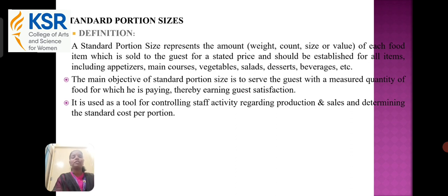The next topic is about standard portion size. A standard portion size represents the amount — by weight, count, size, or value — of each food item which is sold to the guest for a stated price, and should be established for all items including appetizers, main courses, vegetables, salads, desserts, beverages, etc. The main objective of the standard portion size is to serve the guest with the measured quantity of food for which they are paying, thereby earning guest satisfaction. It is used as a tool for controlling staff activity regarding production and sales, and for determining the standard cost per portion.